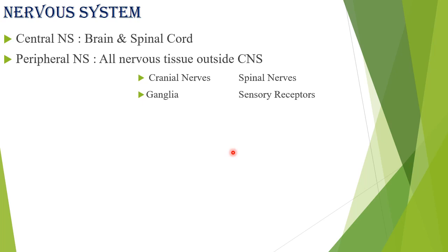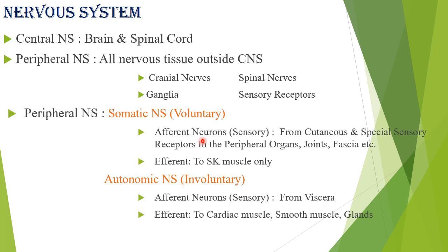We have studied pre-synaptic neuron, post-synaptic neuron, etc. A ganglion or ganglia is similar to a synapse, but instead of a single neuron we consider a group of nerves. If it is a single neuron we call it a synapse; if it is a group of neurons we call it ganglia. Sensory receptors we already know.